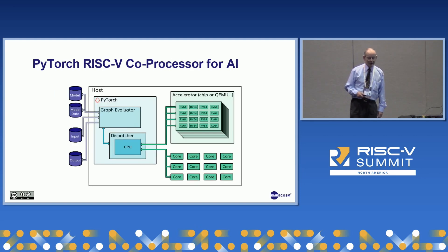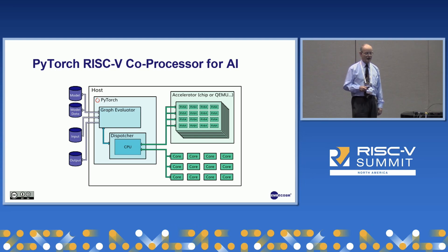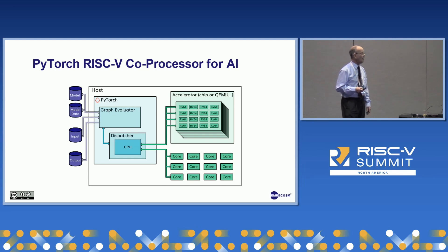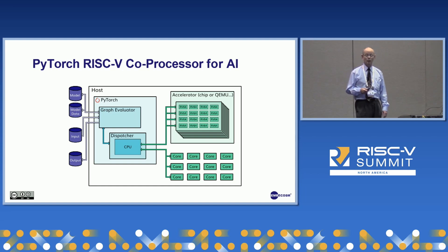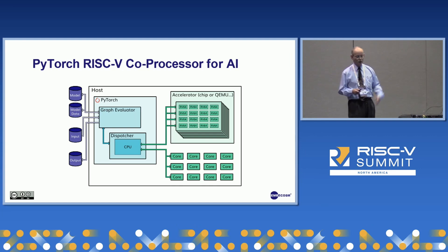Let's take a real example. This is a PyTorch RISC-V coprocessor. It's got a host — that could be an x86 or a RISC-V — and it's got a whole load of RISC-V accelerators, RV64s, and in some cases with matrix multiplication units or other accelerators on them. So this is what PyTorch likes — this is a specific version of the diagram I showed you before.